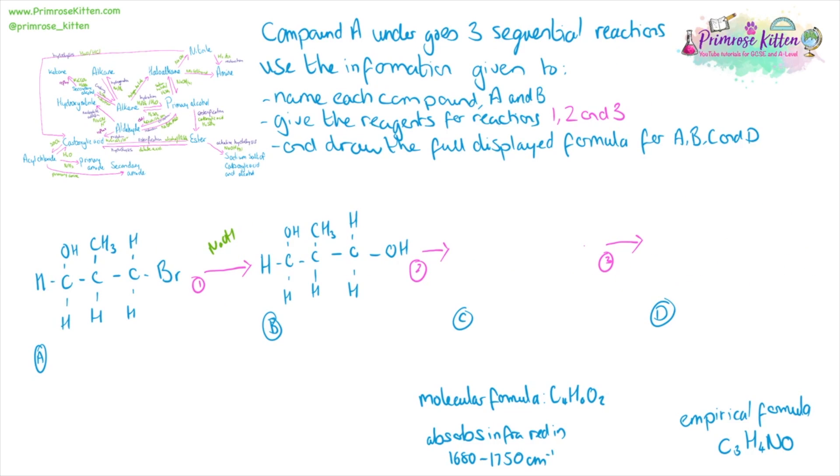Compound A, which is shown on the left, undergoes three sequential reactions. Use the information given to name A and B, give the reagents for reactions one, two, and three, and draw the full displayed formulas for A, B, C, and D. So for A, we need to give the name, which is going to be 3-bromo-2-methyl-propan-1-ol. We're told that it undergoes a reaction with sodium hydroxide and becomes a diol. The halogen group is going to be replaced with an alcohol group.